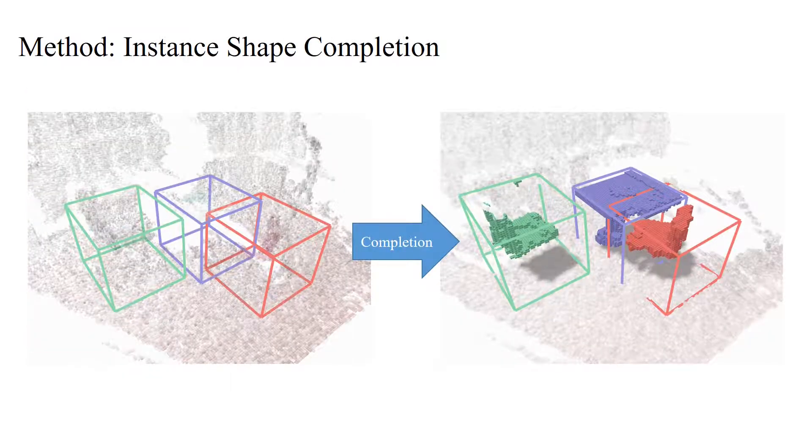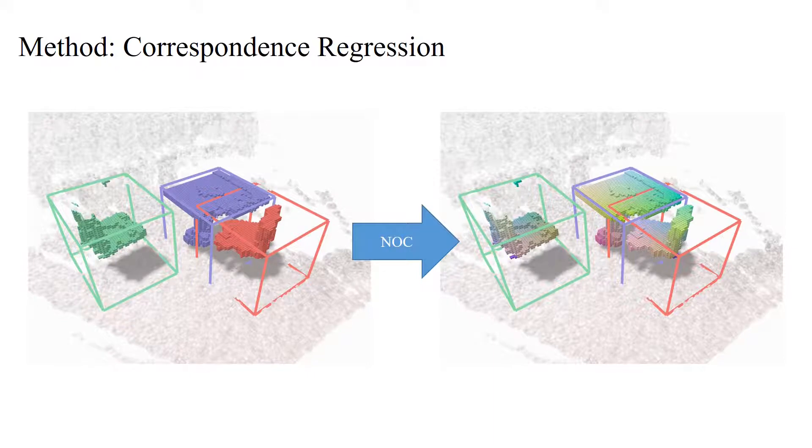For detected objects, we can then predict its complete shape as a dense object mask, simultaneously with canonical correspondences as normalized object coordinates.